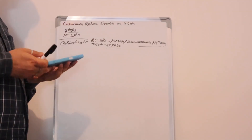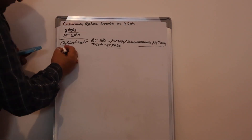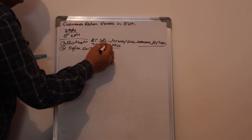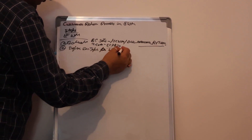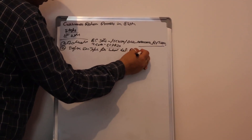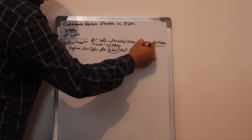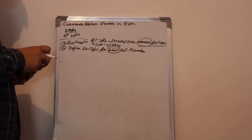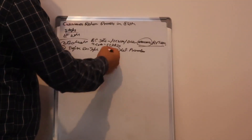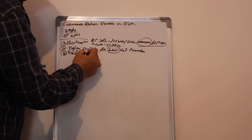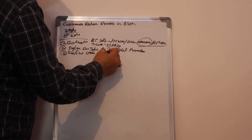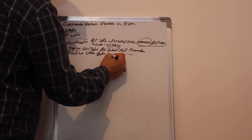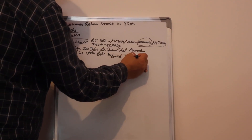After activating this business configuration set, the second step is we need to define the document type for the inbound delivery process. Then the third point: if you have a header document, then define the item type for the same inbound delivery process.